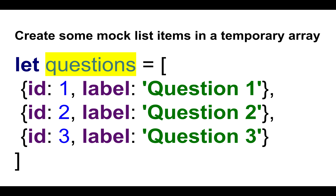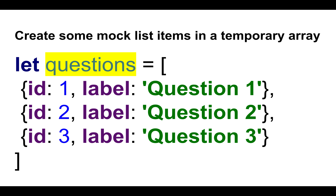Let's start with something hardcoded. We have labels — question one, two, and three — and unique identifiers. Since it's a constant available in the same file, we can just refer to it and pass it as a property to the list component. The list component can receive that property, extracted from props. Here we're just displaying the size of the array, and right now there are three. So we have a way of passing information down to a component.